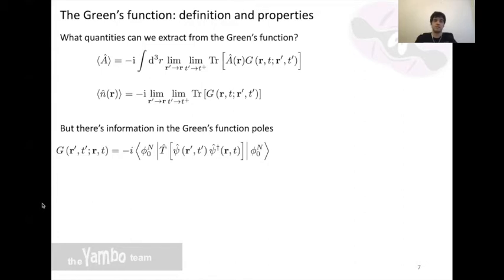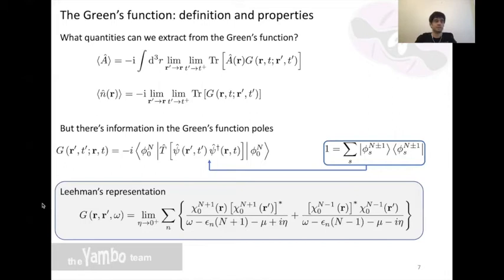You can see this by doing the following. We introduce a series of complete Slater determinants of N+1 and N-1 particles. Then we take the Fourier transform in time and move to energy. This lets us arrive at the Lehmann representation of the Green's function.